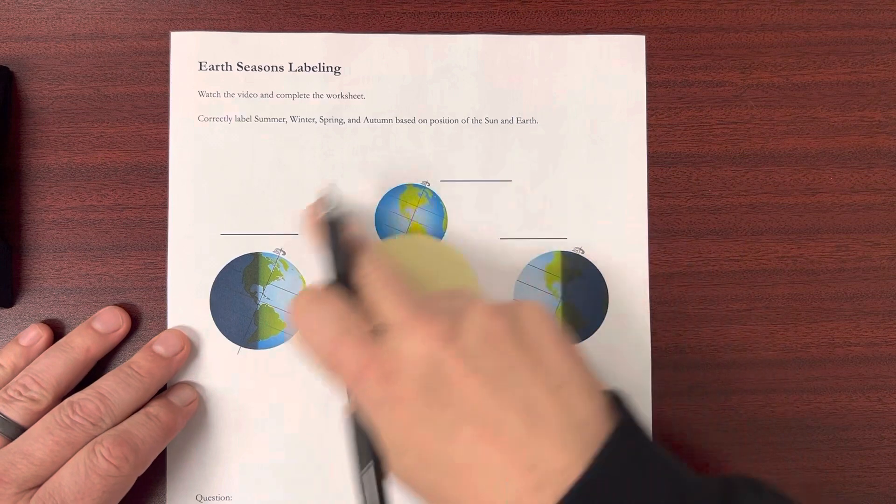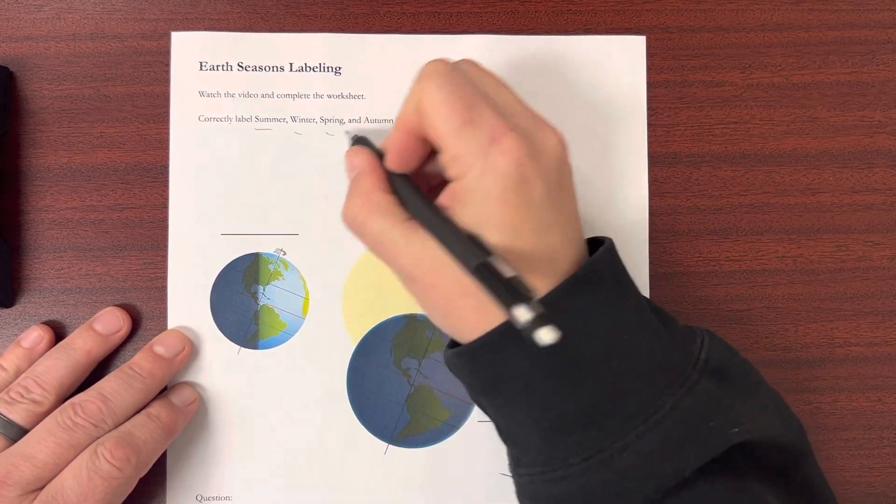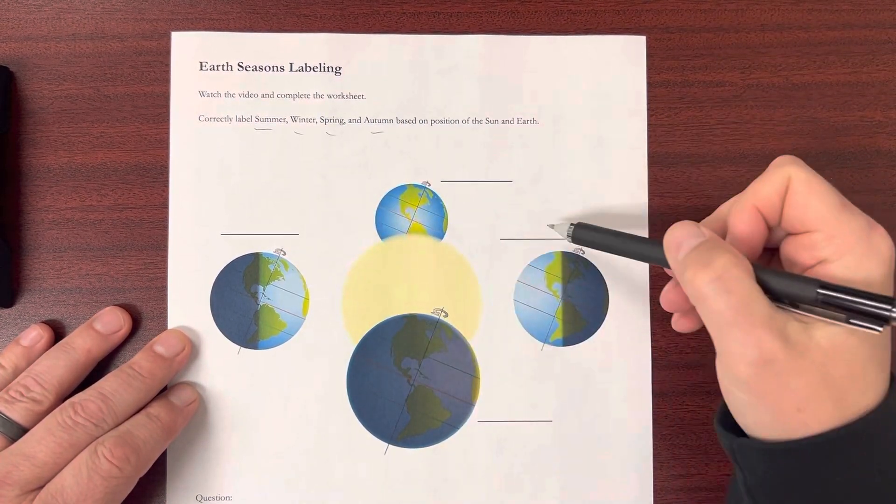All you're doing is in this image below, you're going to label which one is summer, winter, spring, and autumn. And you'll just write that on these four lines.